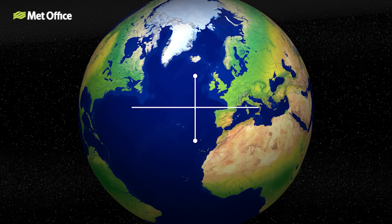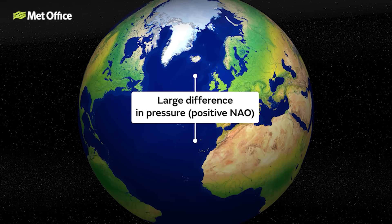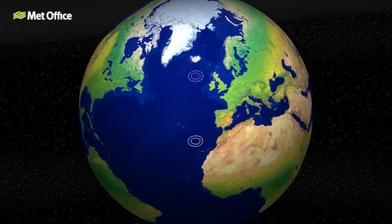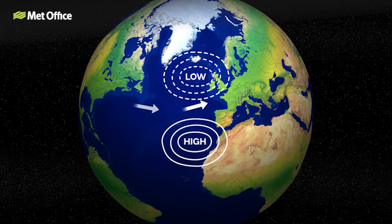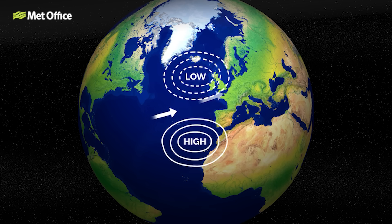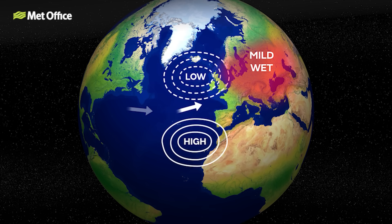In a positive NAO phase, when the pressure difference is greater than normal, there is a strong pressure gradient and the westerly winds that blow across the Atlantic are strengthened. For the UK, this brings milder, wet and occasionally stormy winter weather as warm, moist Atlantic air dominates.